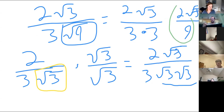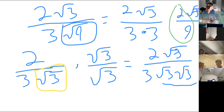One thing to check: this 2 and this 9 — we want to make sure that's fully reduced. But there are no common factors — 9 is nothing but 3s, and 2 is nothing but 2s. So that's good.